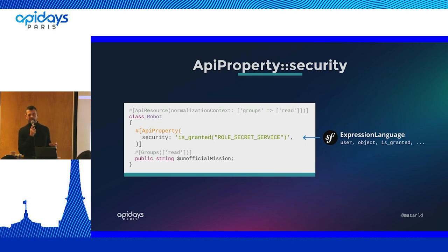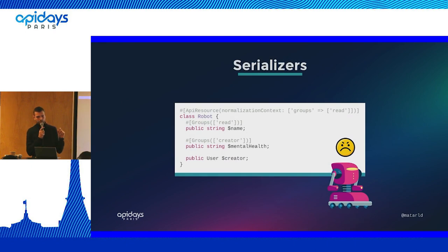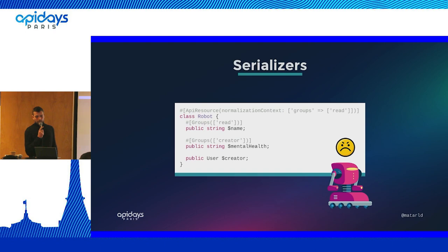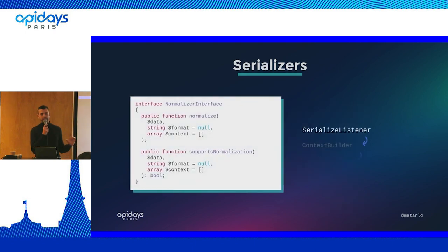Keep in mind that if you have a really complex use case, you can still fall back to context builders for complex stuff. Until now, we've only analyzed the current request - we never taken into account the current resource instance. New example: we want to expose the robot's mental health to its creator only. With the previous solution, it's impossible. So we're going to use one step further - the Serializer, and more precisely, the normalizers.